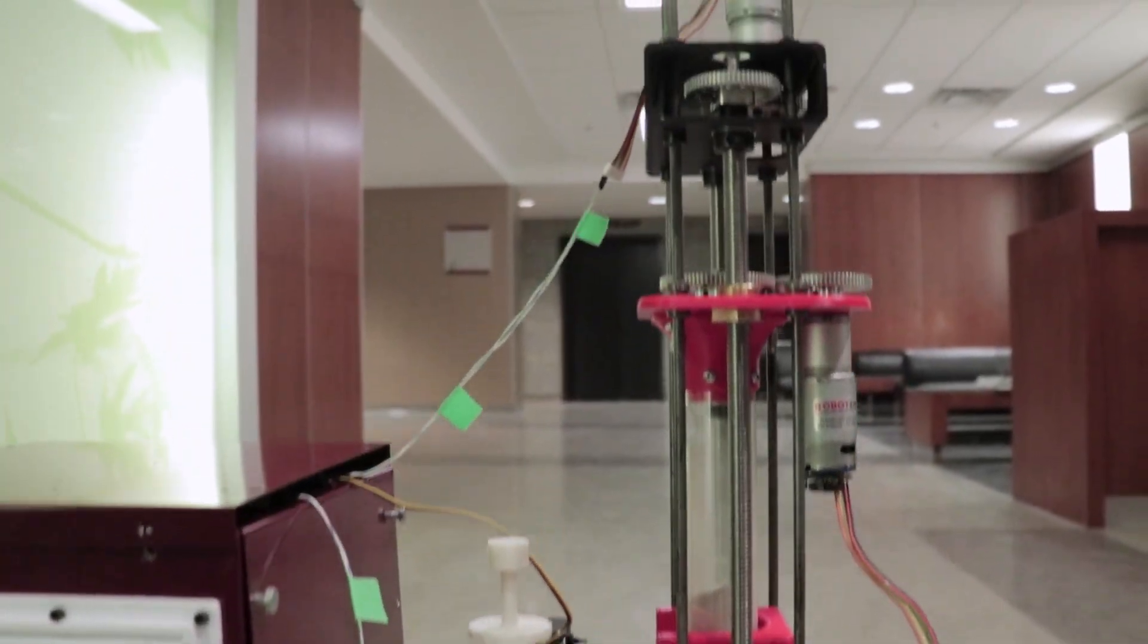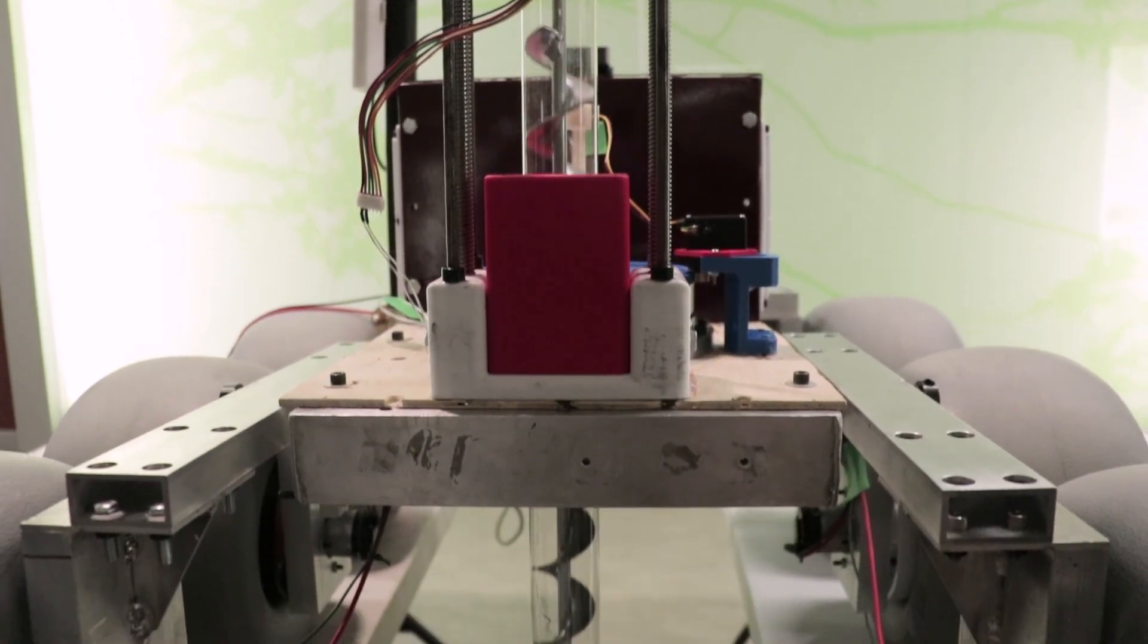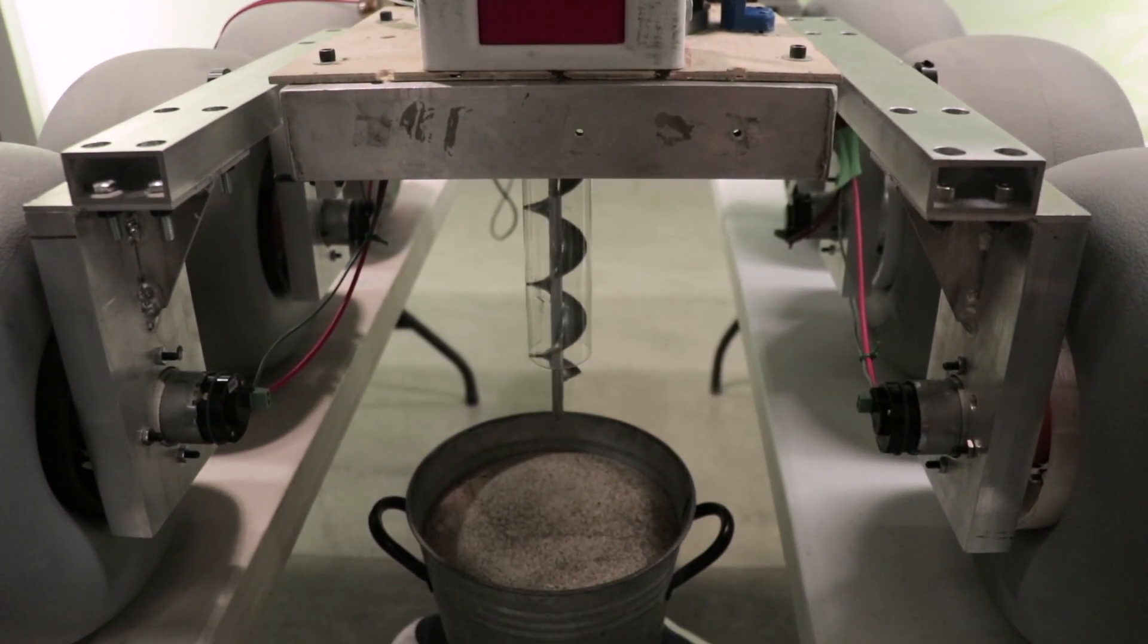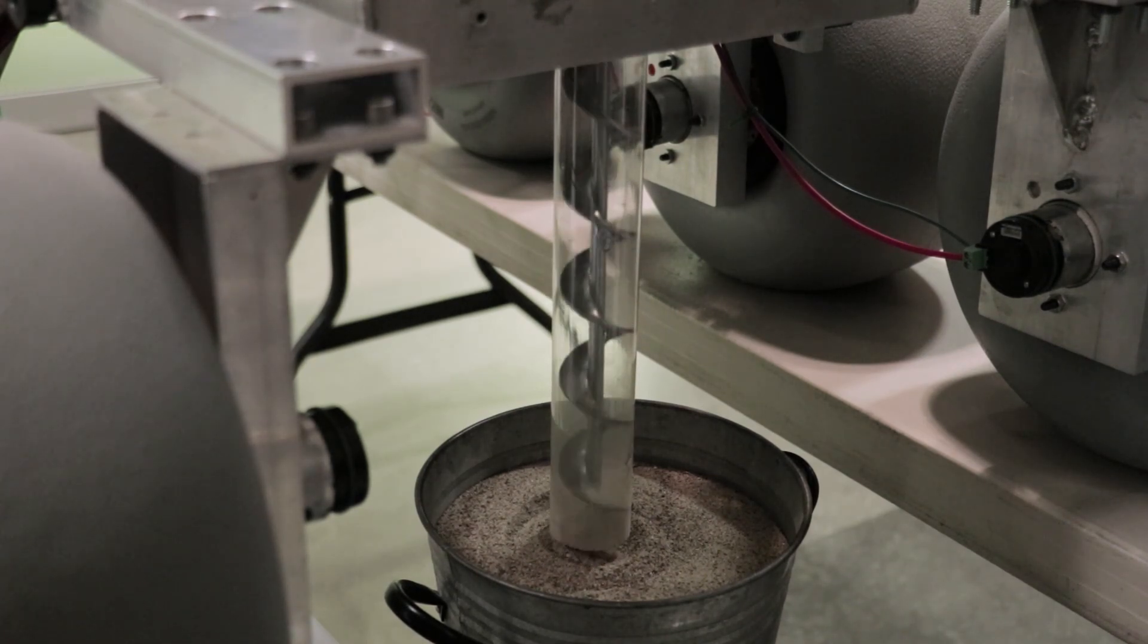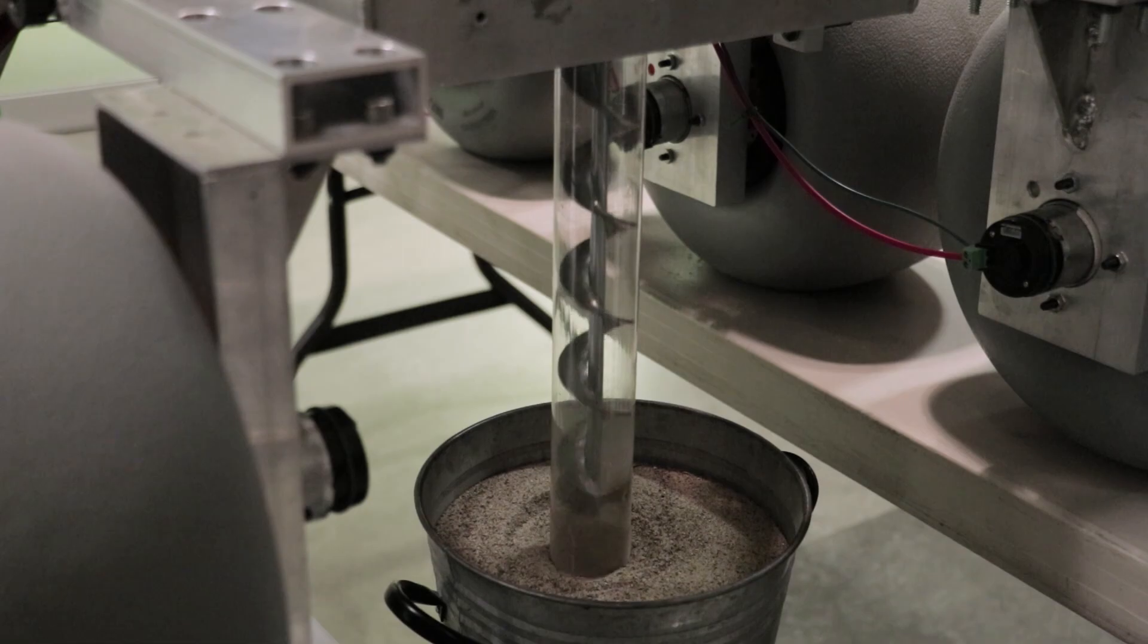An auger and a power screw mechanism drills and places soil into separate test tubes. The drill allows for storage of up to 12 soil samples and moves their locations with a limit switch and motor combination.